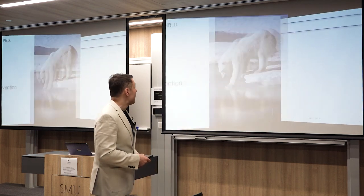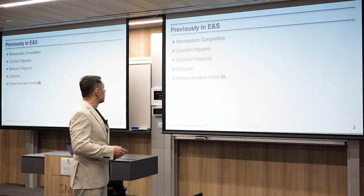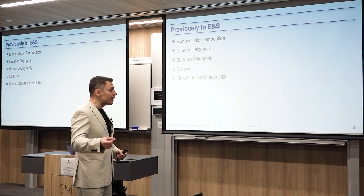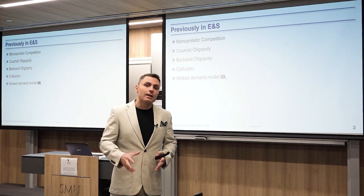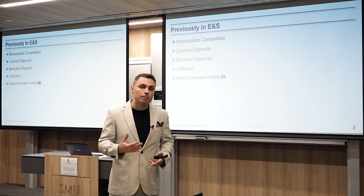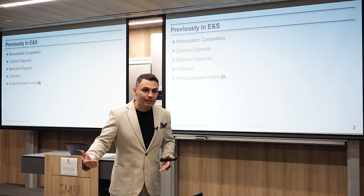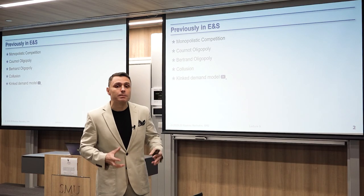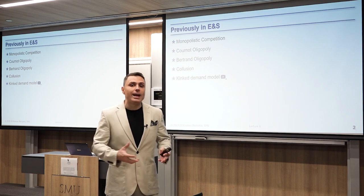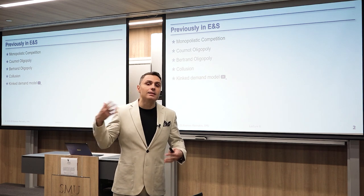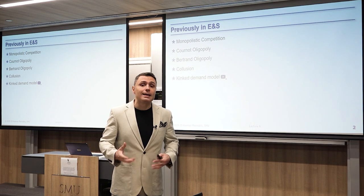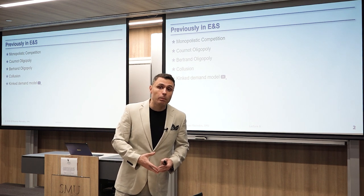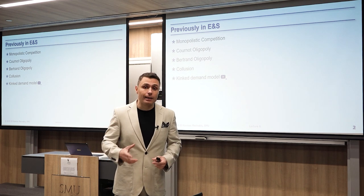Let's get started and remember what we talked about last time. Previously in economics and society, we talked about monopolistic competition, Cournot oligopoly, Bertrand oligopoly, and collusion — the three different market approaches in oligopoly. We also had monopolistic competition, which is a hybrid between a pure monopoly and a perfectly competitive market. Last time we discussed the kinked demand model, where firms react differently when somebody decreases the price versus when somebody increases the price. This results in a marginal revenue curve that is broken, so changes in marginal cost may not lead to a change in price, creating market rigidity.